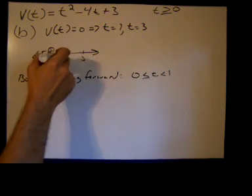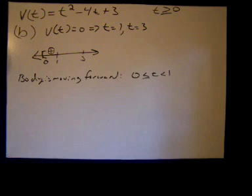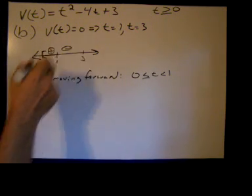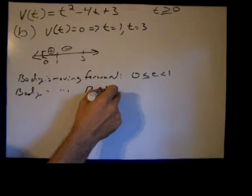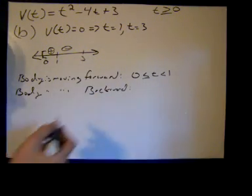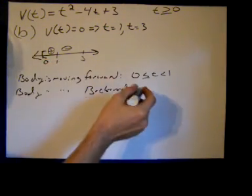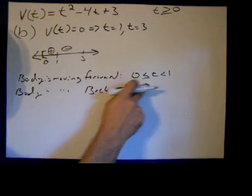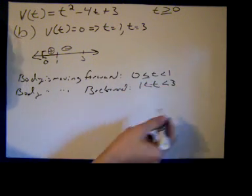On the interval between 1 and 3, we test t = 2: 2² = 4, minus 4·2 = 8, so 4 - 8 = -4, and -4 + 3 = -1. We get a negative number, so the body is moving backward on this interval. Note that at t = 1 and t = 3 the velocity equals zero, so the body is sitting still at those endpoints.